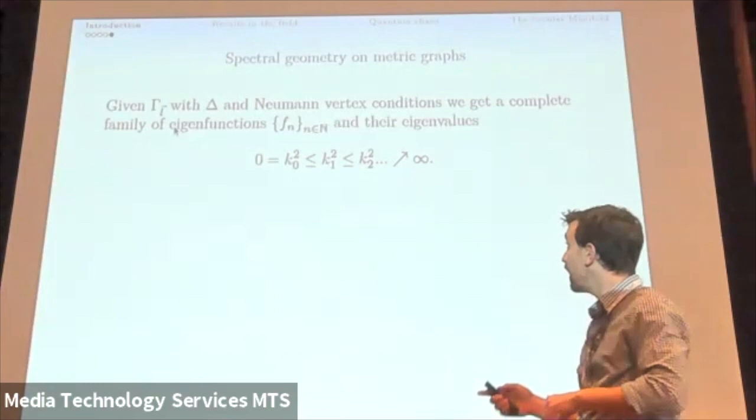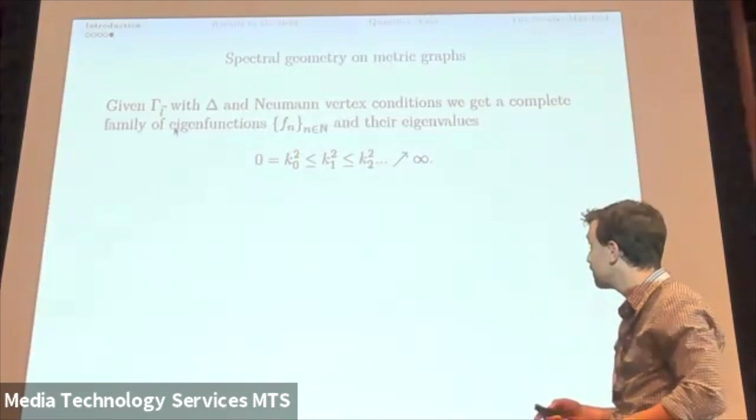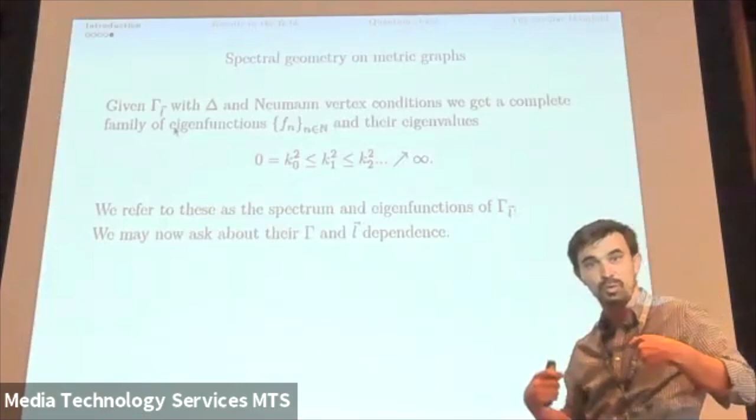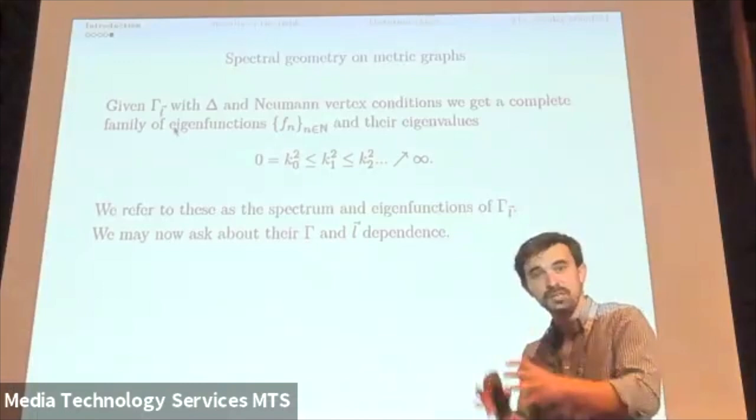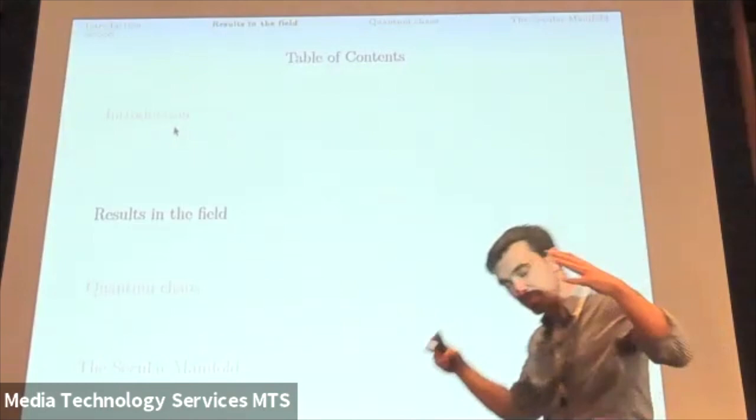Again, the eigenvalues are arranged increasingly, goes from zero for the constant function, goes up to infinity. It is standard to use the square roots of the eigenvalues, and now we can talk about their dependence in the object. And now the object is much more easy to deal with because we can talk about the topology coming from the discrete graph and we can talk about the metric, which is just a set of edge lengths that we're talking about. And this is what we refer to as the spectrum and eigenfunctions of the metric graph. And so that's spectral geometry on metric graphs.